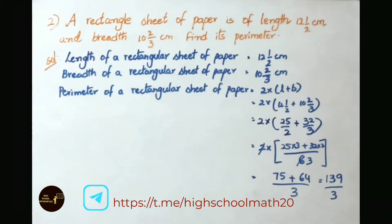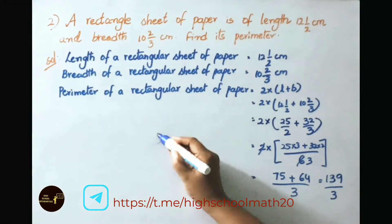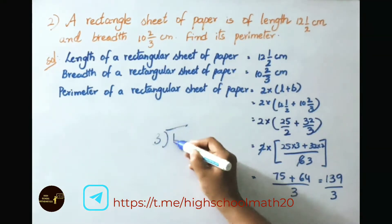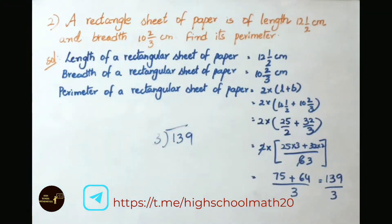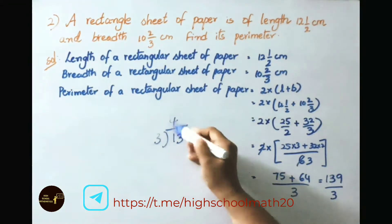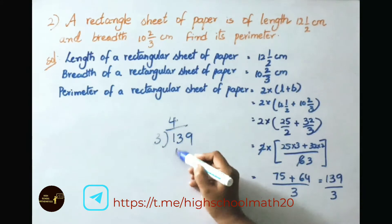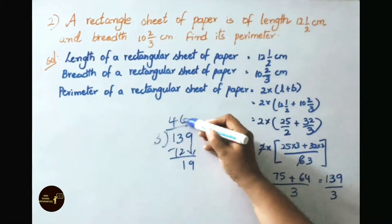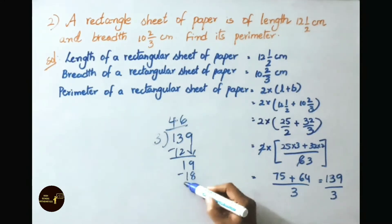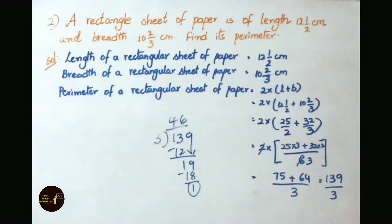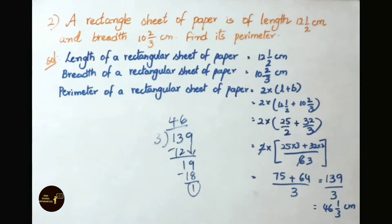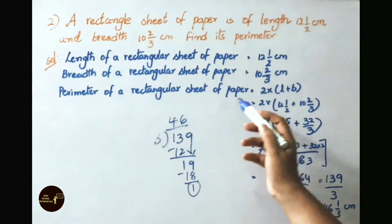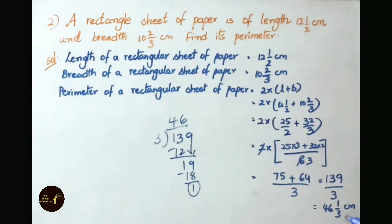Now let us simplify by doing division. Dividing 139 by 3: 3 times 4 is 12, 13 minus 12 is 1, bring down 9, 3 times 6 is 18, 19 minus 18 is 1. So the answer is 46 and 1 by 3 cm. Therefore the perimeter of the rectangular sheet of paper is 46 and 1 by 3 cm.